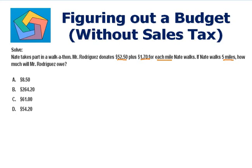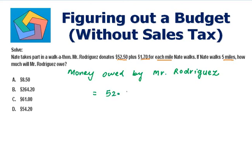Let's calculate. Money owed by Mr. Roderich equals $52.50 plus $1.70 times 5, since Nate is walking 5 miles. That's $52.50 plus $8.50, which equals $61 dollars.